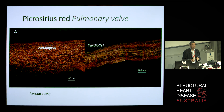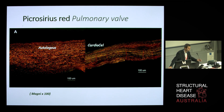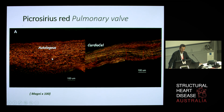The picrosirius red is a very powerful staining of collagen, and different tones of red or orange correspond to different classes of collagen. You can see that the patch here is very well organized — it is relatively old and stable collagen — and this is a very limited scarring process in height, but well organized. Whereas in the autologous, you have young collagen distributed throughout the three layers.